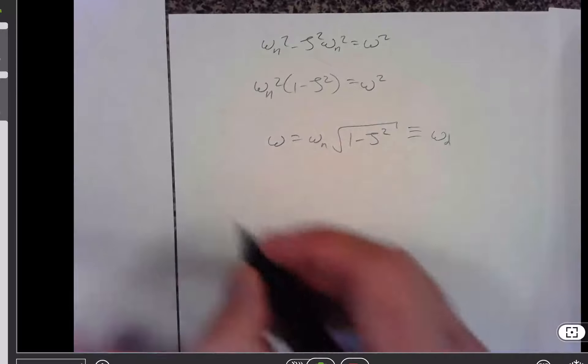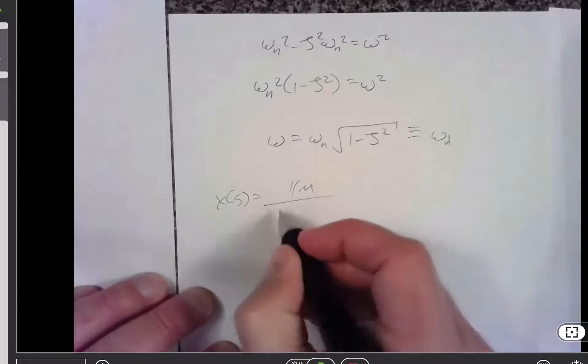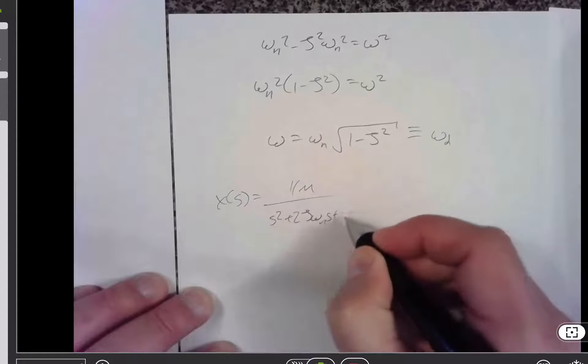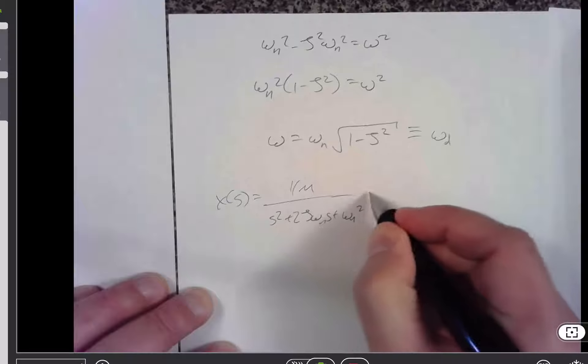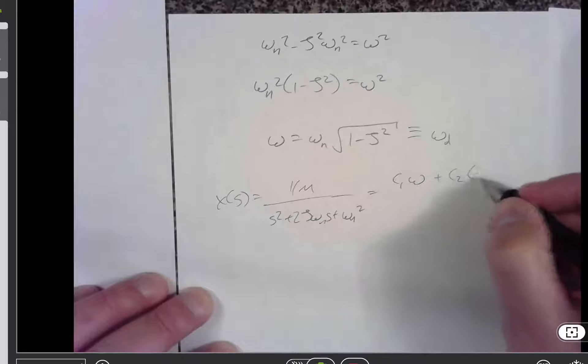So if I've got x of s is 1 over m s squared plus 2 zeta omega n s plus omega n squared, I'm saying that that can be c1 omega plus c2 s plus a.